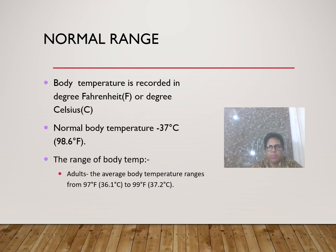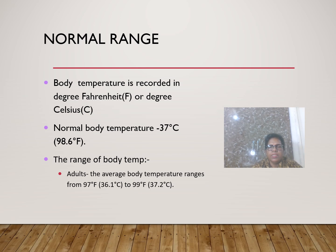Body temperature is recorded in degree Fahrenheit (°F) or degree Celsius (°C). Normal body temperature is 37°C or 98.6°F. However, it is actually a range: in adults, the average body temperature ranges from 97°F to 99°F, or 36.1°C to 37.2°C. This is considered the normal range for an adult.